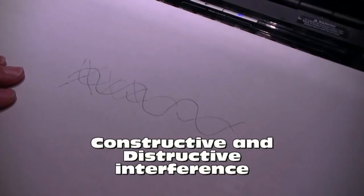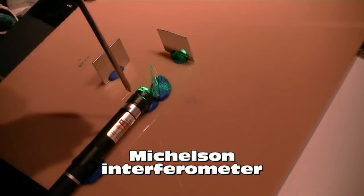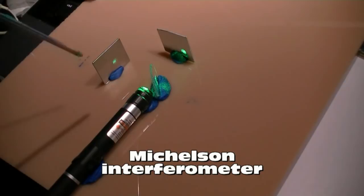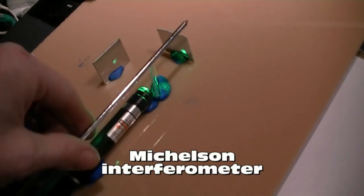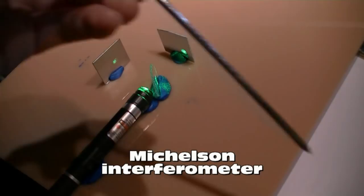On the bottom left is a green laser pointer with a lens taped to it to spread the beam. The beam passes through a 45-degree angle piece of glass, which splits it into two pieces. Both beam paths strike mirrors and come back to the beam splitter and are combined and shot out to the right and projected onto the wall.